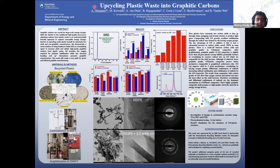But barriers to upcycling waste plastic include low yield and non-graphitizable nanostructure of carbons derived from plastic. Therefore, here we demonstrate a novel solution of using graphene oxide as a templating agent to increase yield and obtain graphitic carbons from plastic waste.